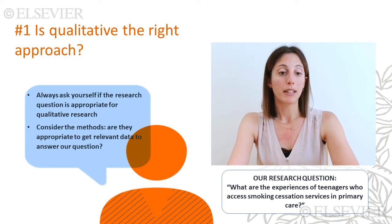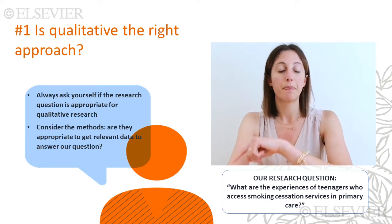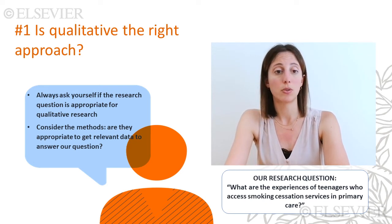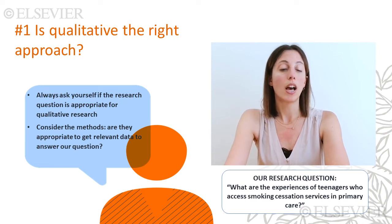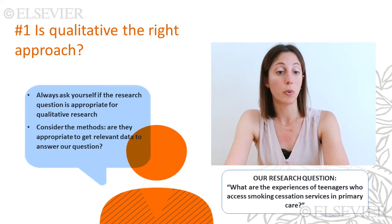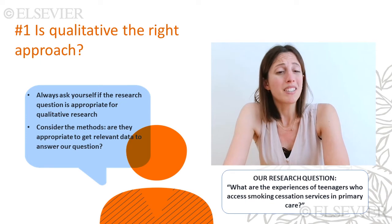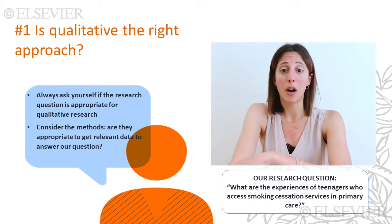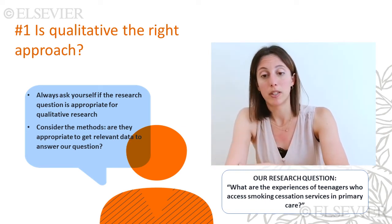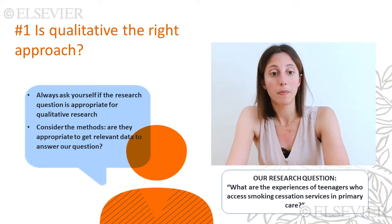So what should we pay attention to when reading qualitative papers? First: is qualitative the right approach given the research question? This is always the first question to ask when reading any paper. Also ask yourself whether the method chosen is most conducive to obtaining meaningful data. For example, if to answer our research question we had decided to sit in and observe teenagers' appointments with smoking cessation services, we might have missed completely the accounts of how teenagers felt, because teenagers are very unlikely to relate how they feel about a service during an appointment with that service itself. So ethnography might not have been the best method in this case.